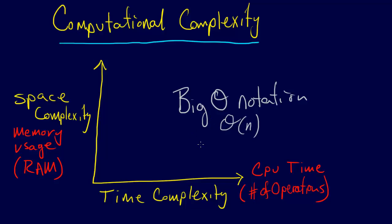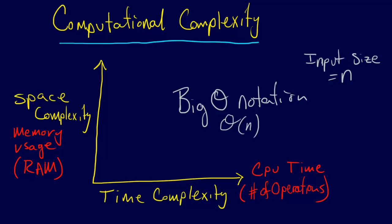The number of operations is analyzed as a function of input size, where input size equals n. Computational complexity refers to a specific algorithm for a specific problem, and the other important thing to know is that it is a worst-case scenario.